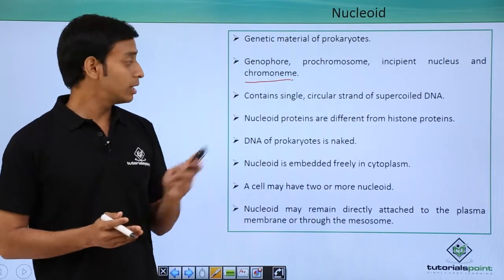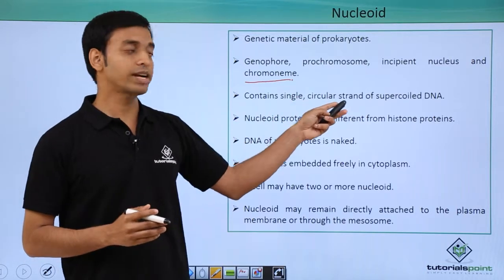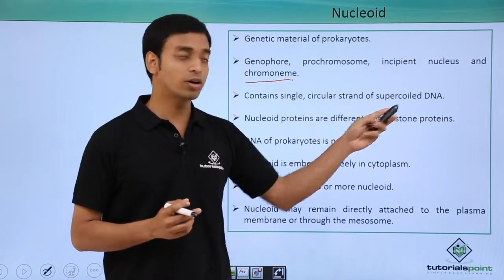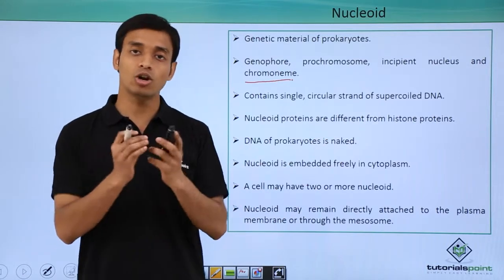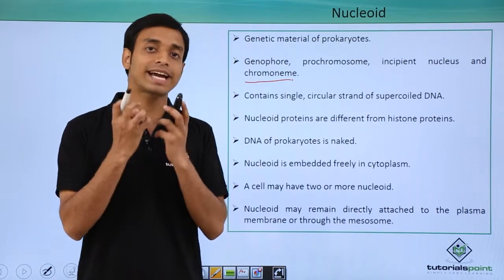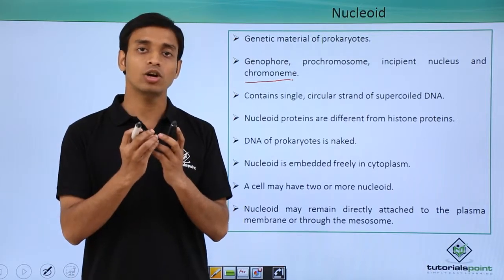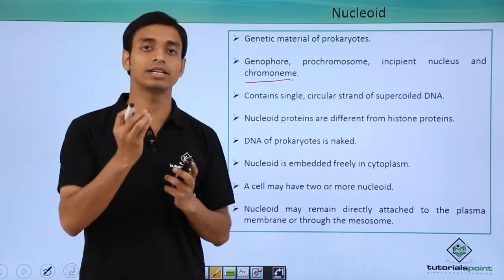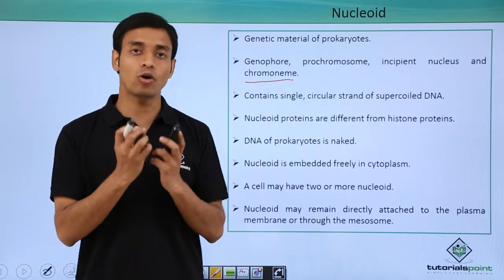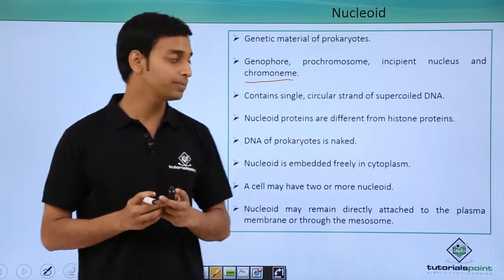Nucleoid contains a single circular strand of supercoiled DNA. What do we mean by supercoiled DNA? Supercoiled DNA means a long strand of DNA that is coiled and tightly packed so that the volume taken by that DNA is very small. So it is a highly packed, coiled structure which is known as supercoiled DNA.